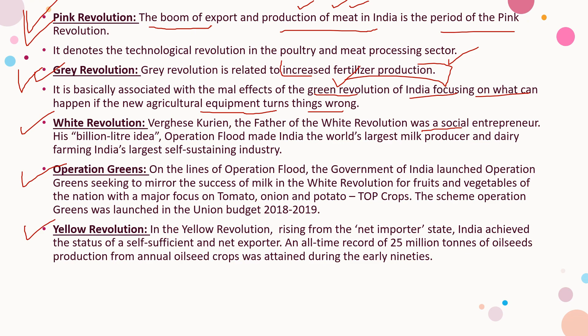Verghese Kurien, the father of the White Revolution, was a social entrepreneur who had a dream called the 'Billion Liter Idea.' Operation Flood made India the world's largest milk producer and made dairy farming India's largest self-sustaining industry. On the lines of Operation Flood, the Government of India launched Operation Green in the Union Budget of 2018-19, with major focus on Tomato, Onion, and Potato — known as TOP crops — seeking similar success for fruits and vegetables.